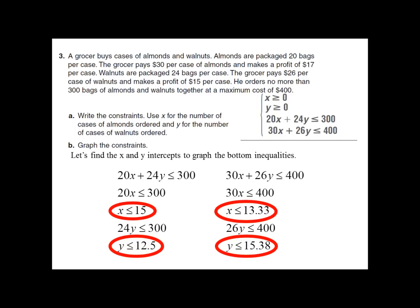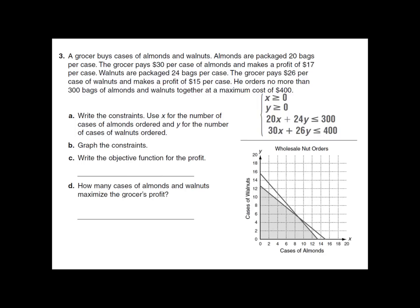X has to be less than or equal to 15, but the other constraint says X has to be less than or equal to 13.3 — so let's stick with 13.3, since it's the lower bound. The lower values tell us where to shade, so here's our feasible region. We've got this corner that might be a pain to find right where those two lines cross — the easiest way to deal with that is to make a good graph. Now we've graphed our constraints and have our feasible region.